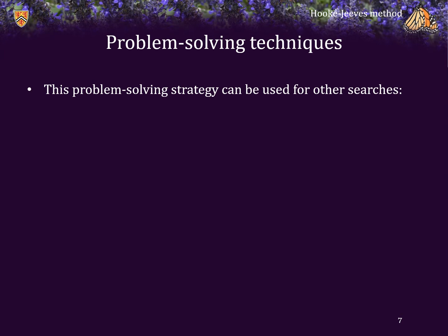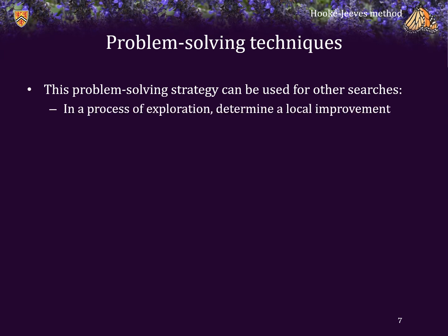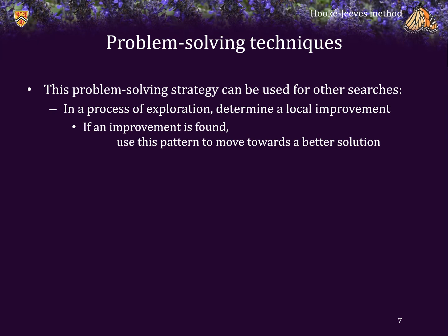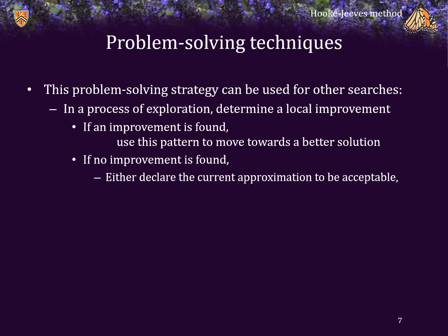To summarize this as a problem-solving technique, this is actually a strategy that can be used in other searches, not just minimization. We have an approximation of a solution and then a process of exploration, where we try to find a local improvement. If an improvement is found, we use the change to the approximation to try to find an even better solution by continuing to move in that direction. If no improvement is found, we either declare the current approximation acceptable or try again with different searching criteria — in our case, by reducing the step size h and searching in a more local area of the current approximation.